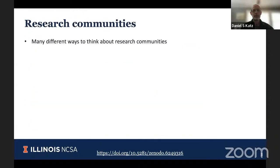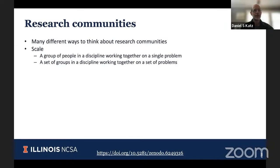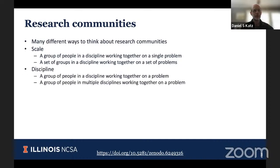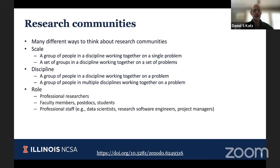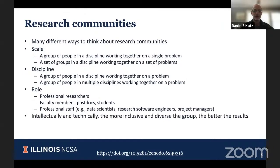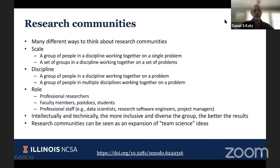If we think about research communities, we can consider them in terms of scale — a group of people in a discipline working together on a single problem, or groups across a discipline working on a set of problems. We can also think about disciplines — a group in one discipline or multiple disciplines working together on a problem. Community members have different roles: professional researchers at national labs or companies, faculty members, postdocs, students, and professional staff like data scientists, research software engineers, or project managers. The more inclusive and diverse the group is, the better the research usually ends up being.